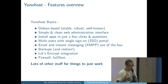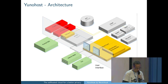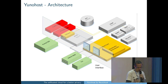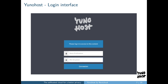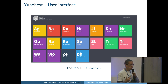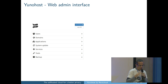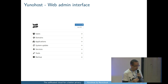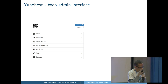Some features of YunoHost: it's Debian-based with a simple web administration interface. You can add apps by just clicking in the web interface. It has SSO support, backup, Let's Encrypt integration, and a firewall — everything you need for self-hosting. The default login interface is customizable. After you're connected, the user interface shows each app as a block you can choose from.